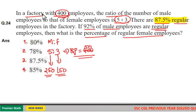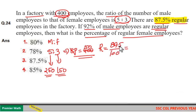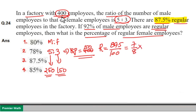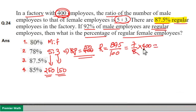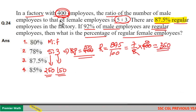87.5% are regular employees. Since 12.5 goes 8 times into 100, 87.5% equals 7/8. So 7/8 of 400 total employees are regular. 8 goes 50 times into 400, and 7 × 50 = 350. So 350 out of 400 employees are regular employees.